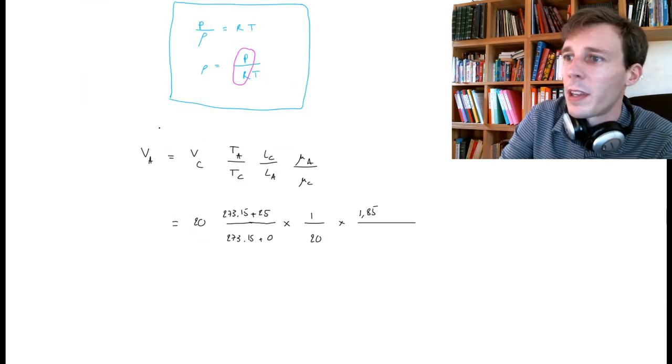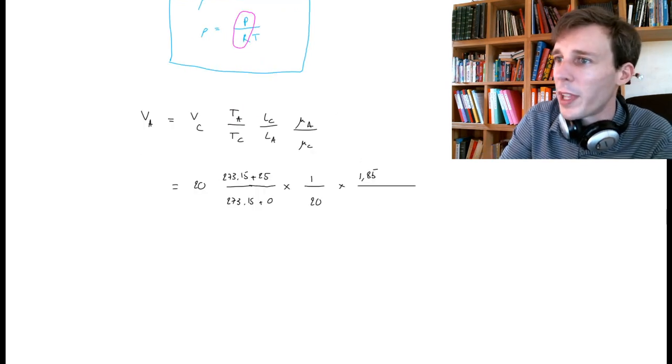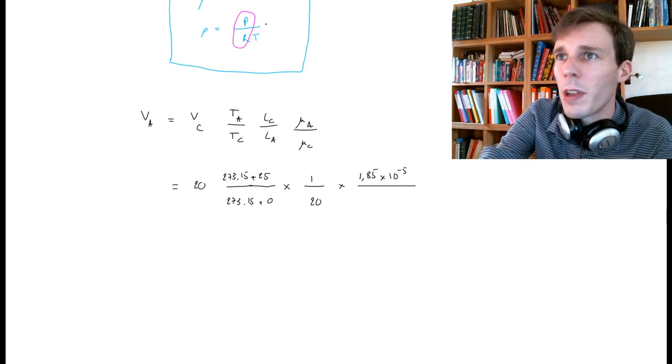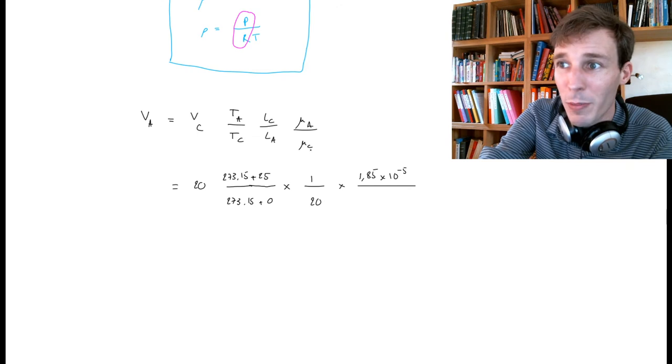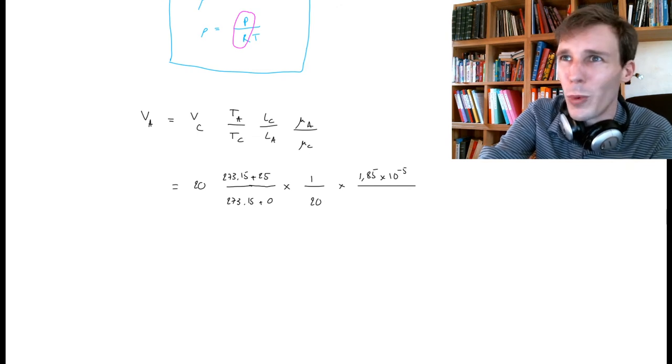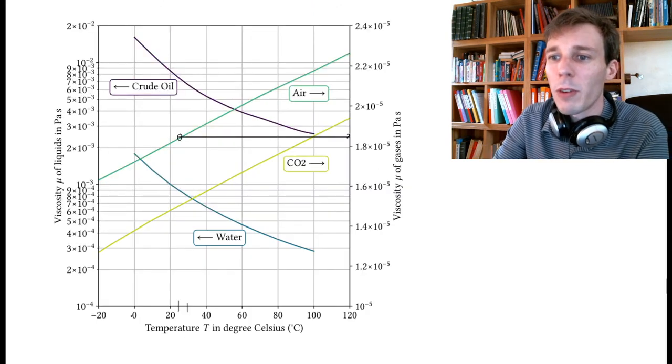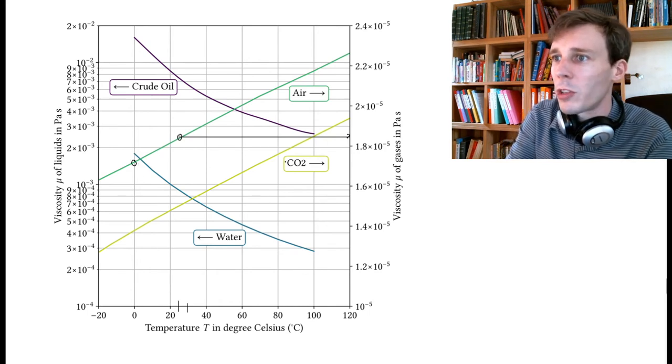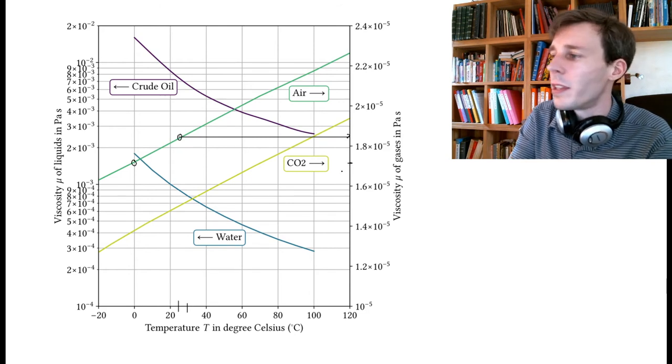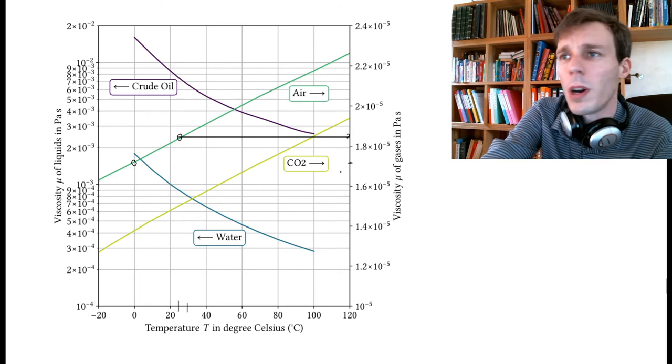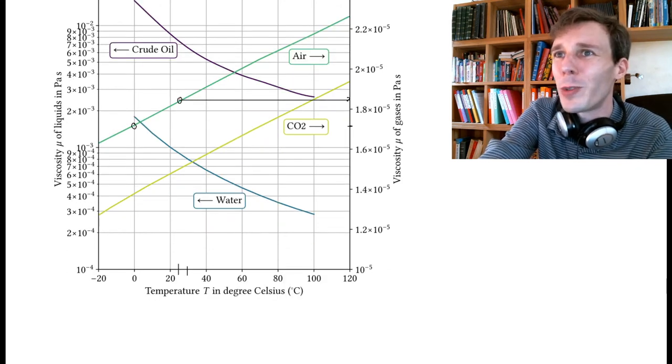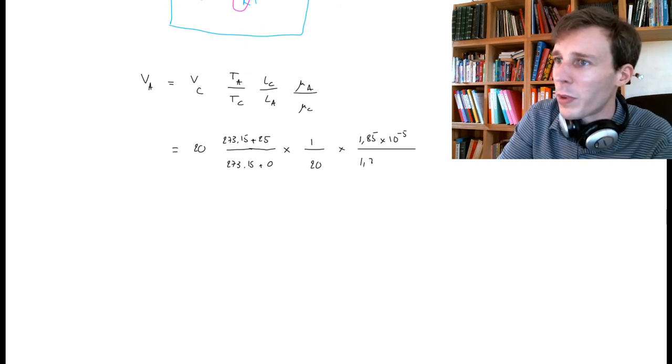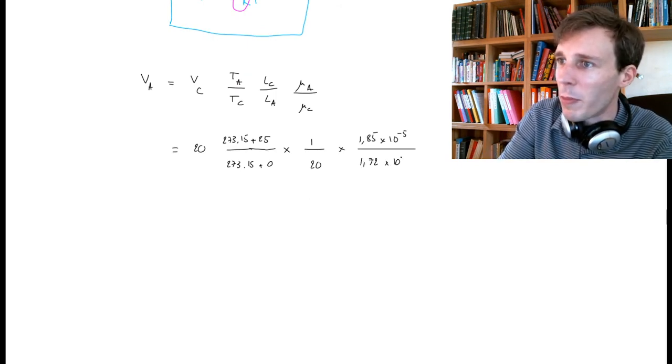I'm going to check very carefully the exponent, which is 1 times 10 to the power minus 5 Pascal seconds. So 1.85 times 10^-5. On the bottom, I have the viscosity at the temperature in the wind tunnel at zero degrees. I intercept this curve and shoot to the right, which gives me approximately 1.72. So 1.72 times 10^-5.